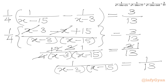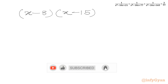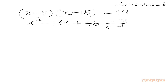Note x cannot be 3 or 15. Taking the reciprocal of both sides gives (x minus 3)(x minus 15) equals 13. Expanding: x squared minus 15x minus 3x plus 45 equals 13, which gives x squared minus 18x plus 45 minus 13 equals 0, so x squared minus 18x plus 32 equals 0.